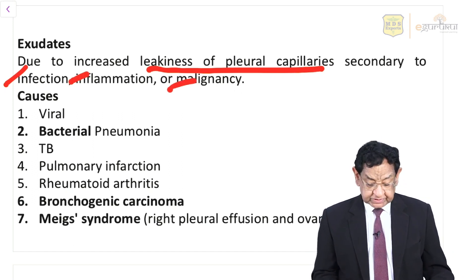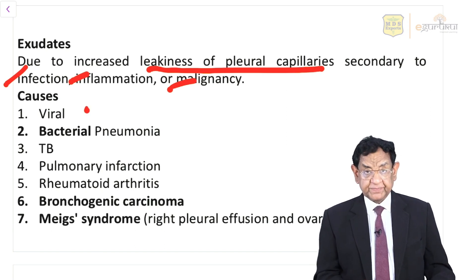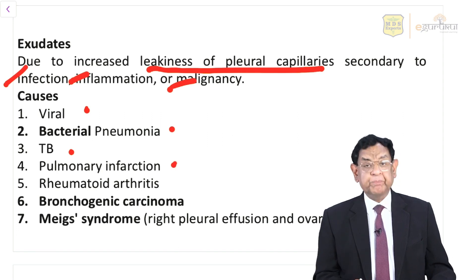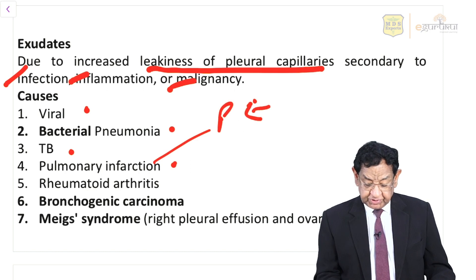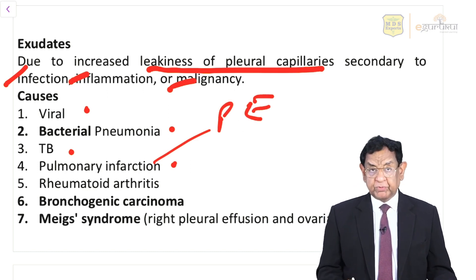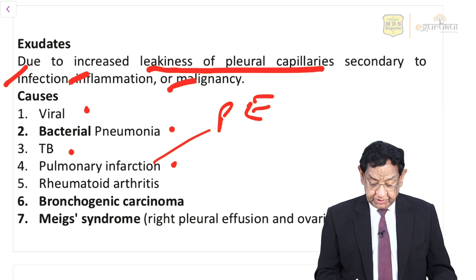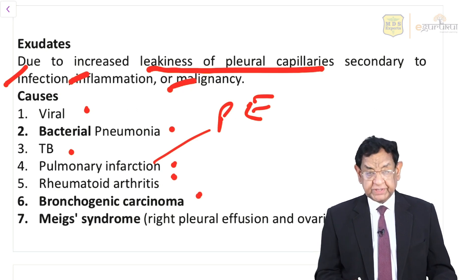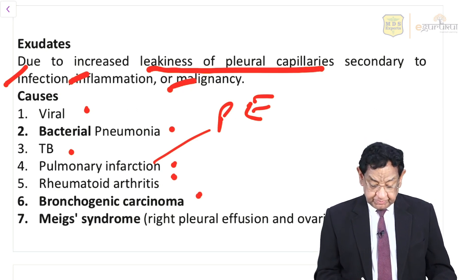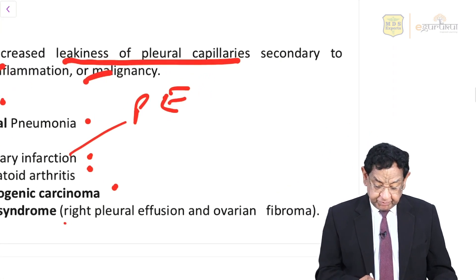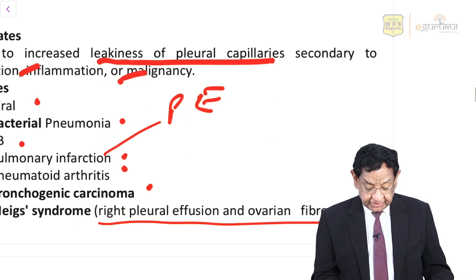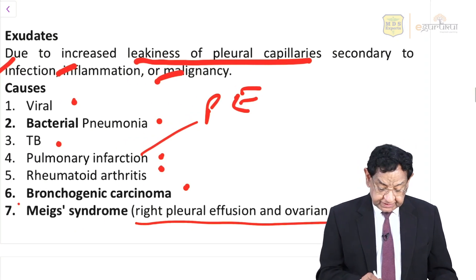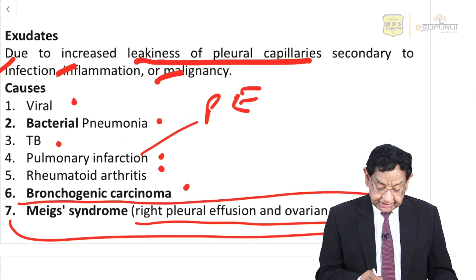The causes of exudative effusion include viral fever, bacterial pneumonia, tuberculosis, pulmonary infarction — usually secondary to pulmonary embolism — rheumatoid arthritis, and bronchogenic carcinoma. Meigs syndrome — which is right pleural effusion with ovarian fibroma — is a very frequently asked question.